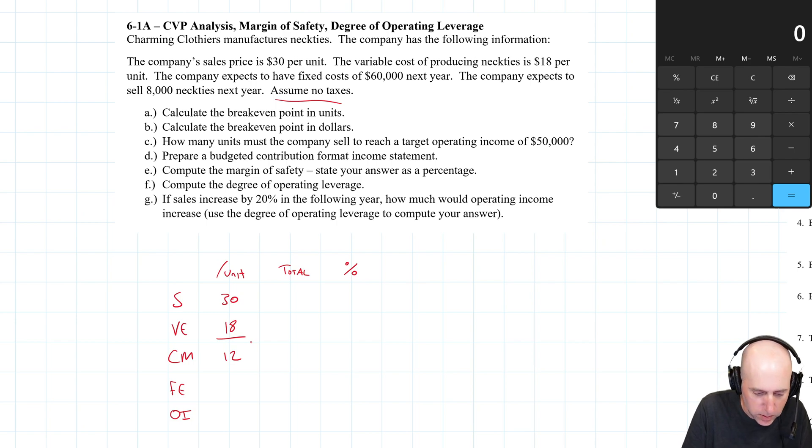My variable expenses per unit $18, and the CM, the contribution margin per unit is $12. In total, this person expects to sell 8,000 units. So 30 times 8,000, that's $240,000. Our variable expenses $18 per unit, and again we're going to sell 8,000, so $144,000. Our CM, 12 times 8,000, that's $96,000.